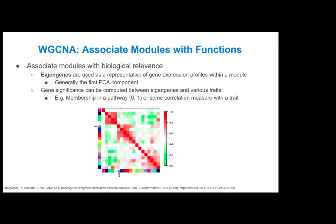You can see the different module colors represented along the rows and columns of the heatmap, showing the correlation between eigengenes from each module. So not only are you looking at the association of each gene module with different biological traits or pathways, but you can also see which modules are similarly related to each other or have similar expression patterns.